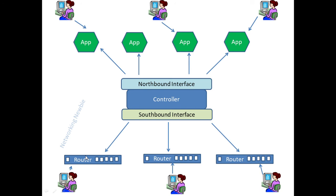The controller performs some of the control plane functions and has two interfaces: the northbound interface and the southbound interface. The southbound interface interacts with the actual networking devices, while the northbound interface communicates with user applications. Users interact with hardware devices through the northbound interface, which connects to the controller, which in turn connects via the southbound interface to the actual networking devices.